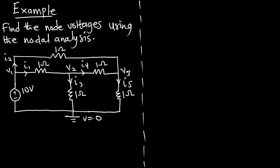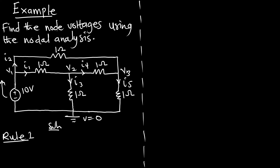Let's see if the rules of analysis using the voltage source apply here. Rule 1 says: if a voltage source is connected between a non-reference node and a reference node, the voltage is set equal to the non-reference node. This makes V1 simple to calculate because the voltage source is between the non-reference node V1 and the reference node. So V1 is simply equal to 10 volts. There is no other voltage source, so no super node is formed.